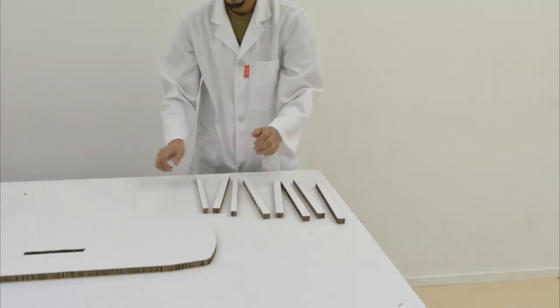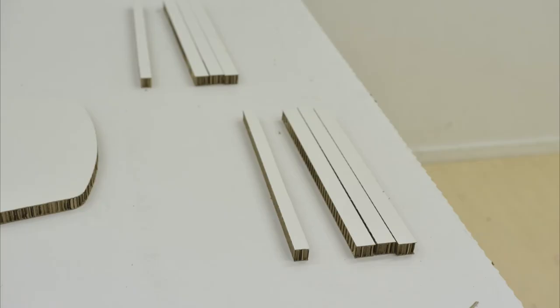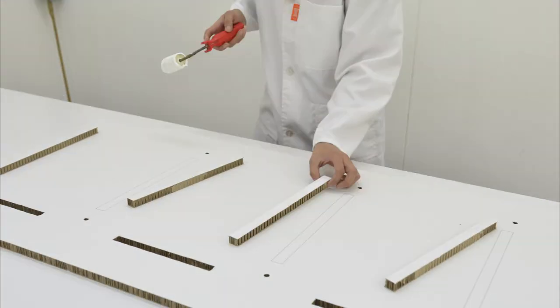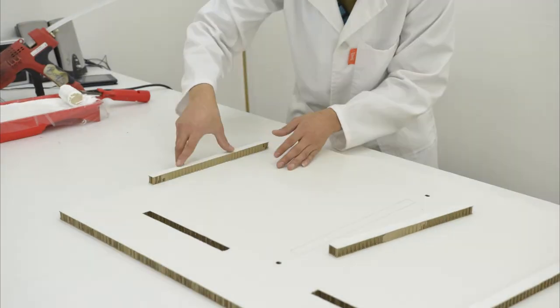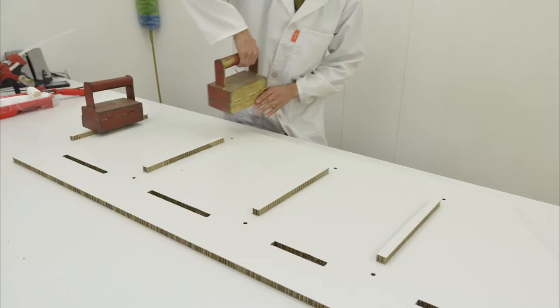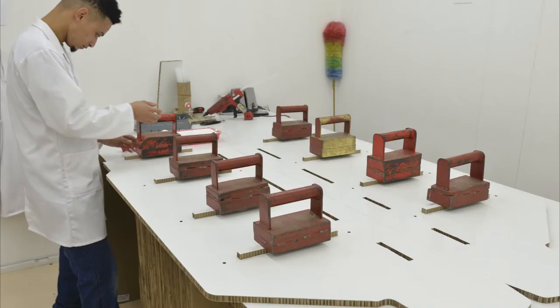Next up we're going to glue on the shelf support strips to the side panels. Use the same cold glue as before and simply lay them into position as indicated by the pen marks on the side panel once you've applied your glue with the roller. Again we put some weights down to ensure you get a good bond.